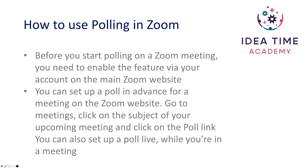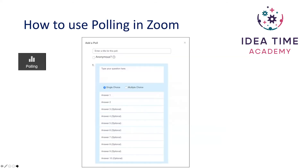You can also set up a poll live while you're in session. When you're in session, you can just click on the polling icon and this box here will pop up. You'll see that it says 'Add a Poll' — you just give it a title, tick whether or not you want it to be anonymous, type in your first question and then set up whether you want single choice or multiple choice answers.